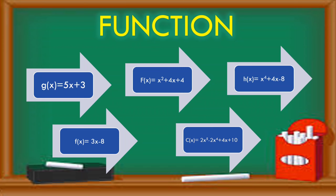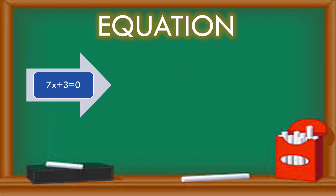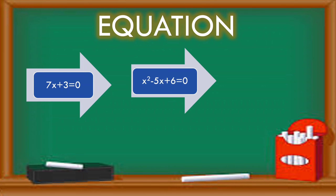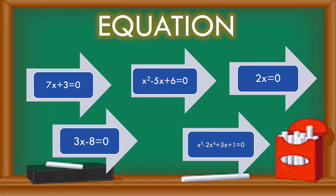Unlike expression, wala noon. How about equation? 7x plus 3 equals 0. x squared minus 5x plus 6 equals 0. 3x minus 8 equals 0. x to the fifth minus 2x to the fourth plus 3x plus 1 equals 0. Sana napansin natin how different are the three terms na important malaman natin when it comes to polynomials.